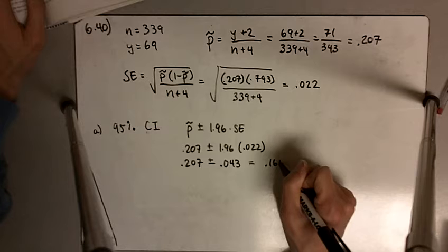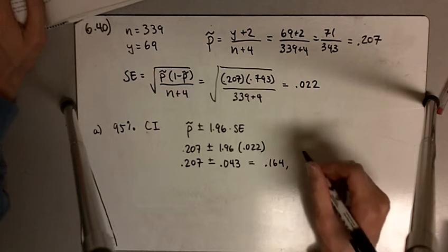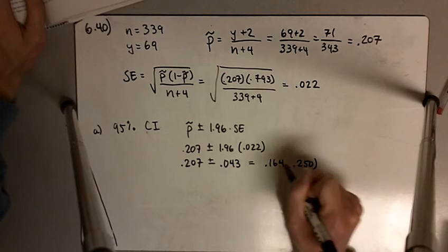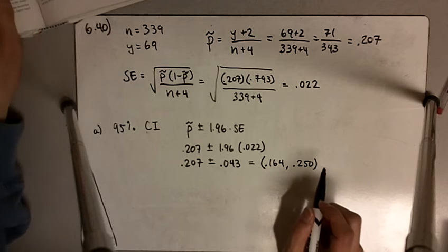you get 0.164, and if you do 0.207 plus 0.043, you get 0.250. So this is our 95% confidence interval.